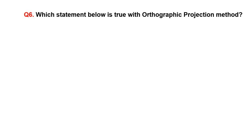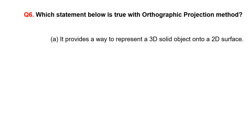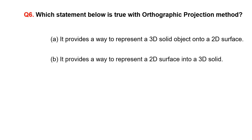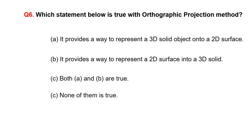Which statement below is true with orthographic projection method? A. It provides a way to represent a 3D solid object into a 2D surface. B. It provides a way to represent a 2D surface into a 3D solid. C. Both A and B are true. D. None of them is true.